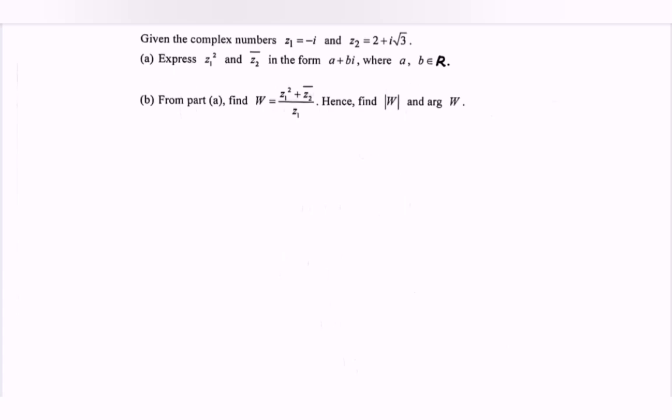Hello everyone, in this video I'm going to discuss an example for complex numbers. Given the complex numbers: z₁ equals negative i, and z₂ equals 2 plus i times square root of 3.